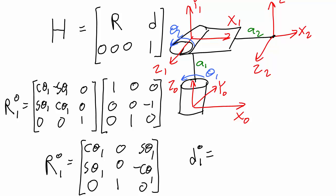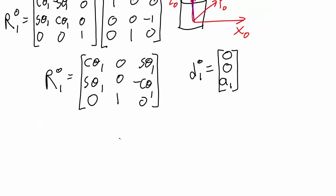The other part I need for my homogeneous transformation matrix is the displacement vector. The displacement vector from frame 0 to frame 1 is this vector right here. Remember that I need to write this so that it is true no matter what rotation I have of theta 1. The displacement between the center of frame 0 and the center of frame 1 is completely in the z0 direction always, no matter what the rotation of theta 1 will be. So the displacement vector will be 0 in x, 0 in y, and a1 in z.